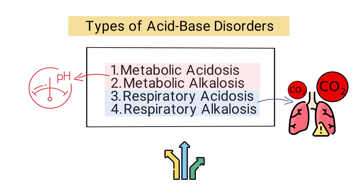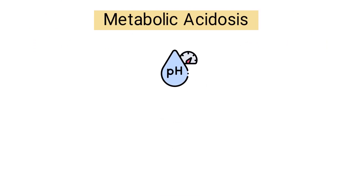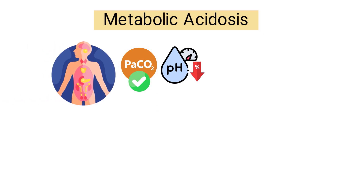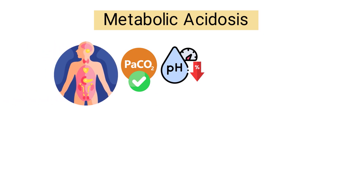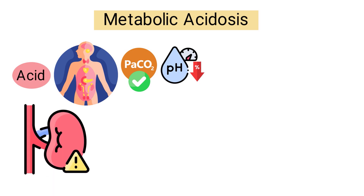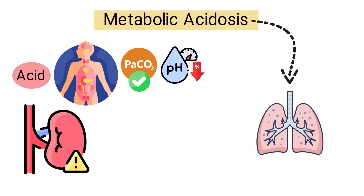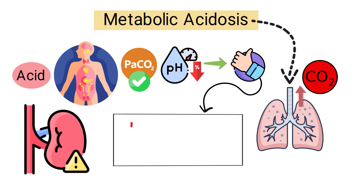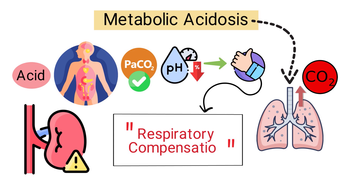Metabolic acidosis is a condition where the blood pH is decreased, PaCO2 is normal, and bicarb is also decreased. This occurs when the body produces too much acid or when the kidneys cannot remove enough acid from the blood. When metabolic acidosis is present, it forces the lungs to work harder to exhale more CO2, helping to offset the acidosis and bring the pH back to the normal range — this is known as respiratory compensation.